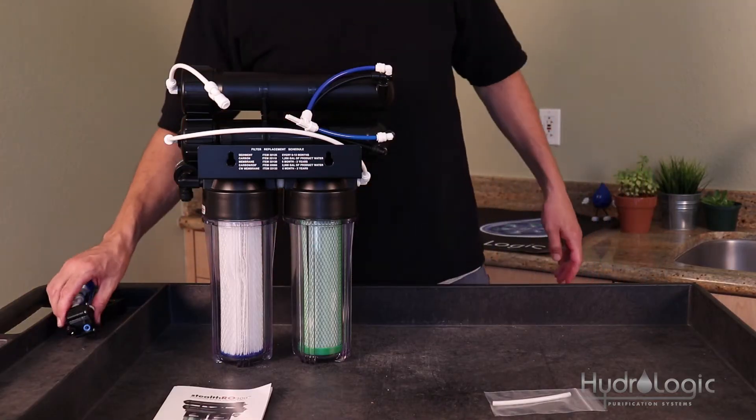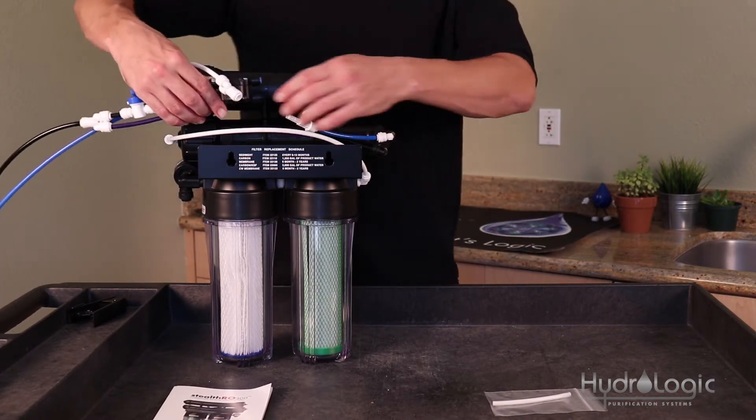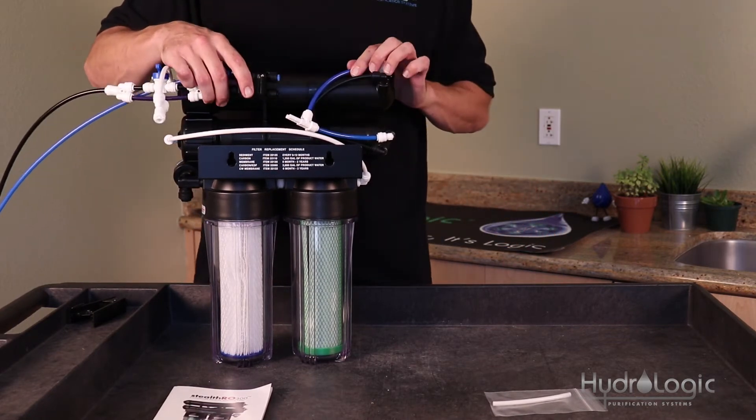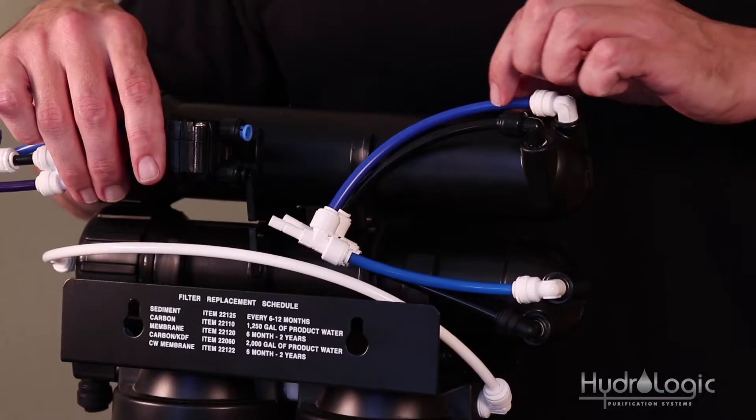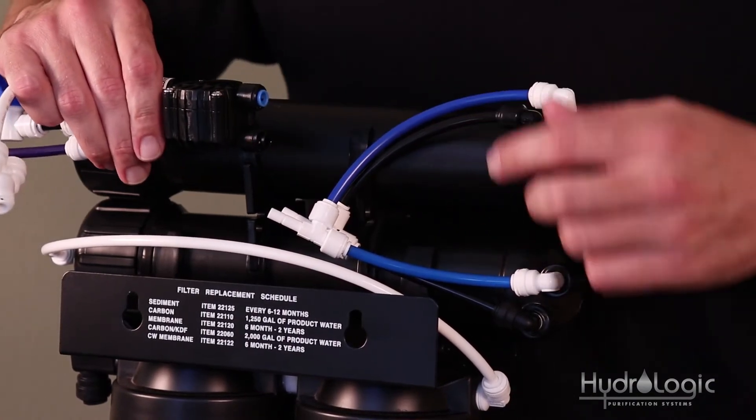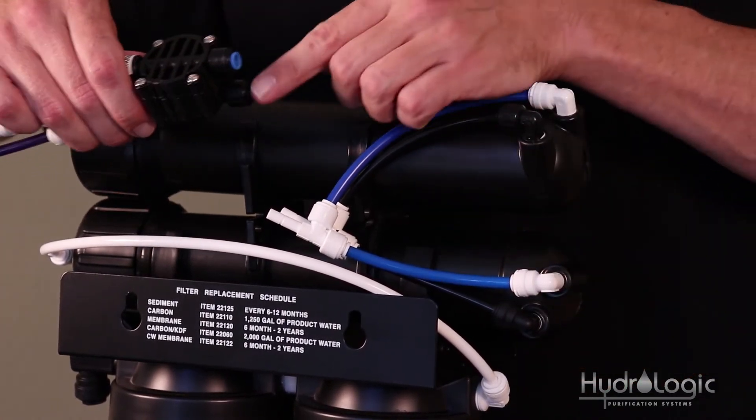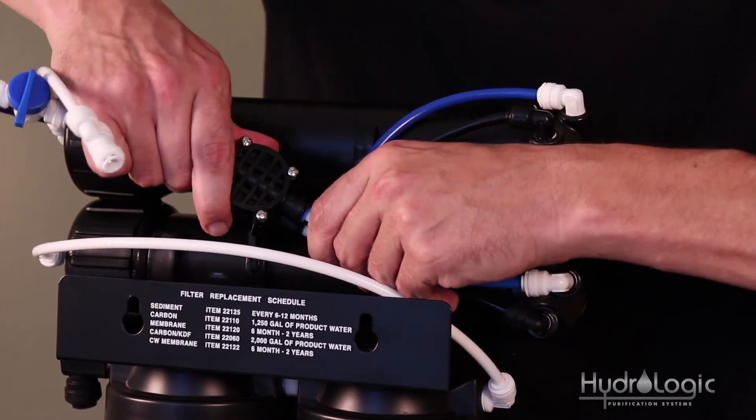Now, take your ASOV that we took off earlier and go ahead and reinstall this by pushing the stems of the corresponding T's into the ASOV. So, in other words, where your blue lines meet up, that's your product water, that goes into the blue collet, and where your black lines meet up, which is your wastewater, is going to go into the black collet. So, go ahead and push that ASOV back on.